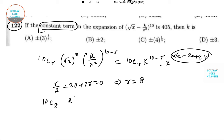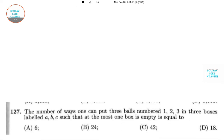If we just put this value, we'll get 10C8 into K to the power 2 equals 405. Putting all these values, we'll get K squared equals 9, or K equals plus or minus 3. So here option D is correct.